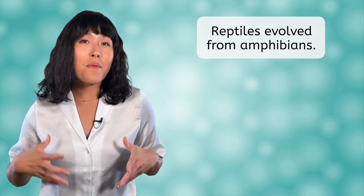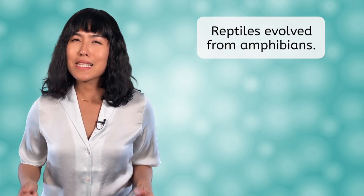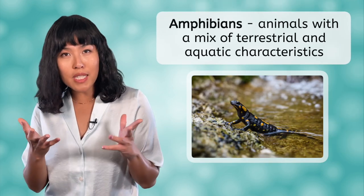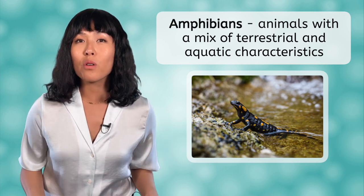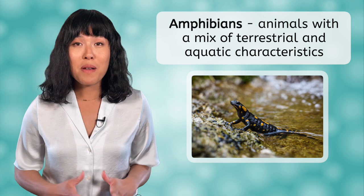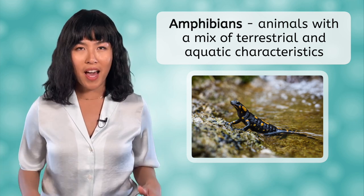If you recall during our reptiles lesson, we learned that reptiles evolved from amphibians to be the first terrestrial animal. In today's lesson, let's take a step back in time to learn about amphibians. Amphibians are the bridge between land animals and aquatic animals, and have a mix of characteristics from both. One example of this is that they have four legs, not fins, but must live near or in water because their skin must stay moist at all times.